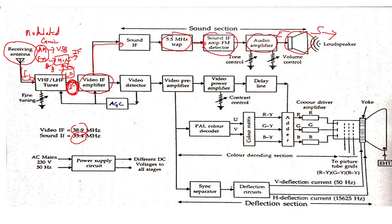Coming back to the video section, after the Video IF amplifier from which the sound was separated, the next stage is the video detector, which detects the video information. From the video detector stage, we also get an Automatic Gain Control (AGC) signal, which controls the gain of the previous two stages — the tuner and the IF amplifier. The composite video signal is then pre-amplified, power-amplified, and delayed for some time.